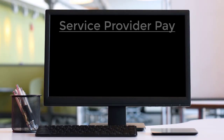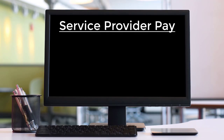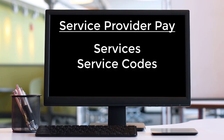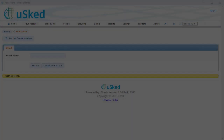Now we are going to talk about the service provider pay aspect of the new billing system. This is where the biggest improvement is. The pay index system is gone. The pecking order system is gone. The new system is much simpler and more straightforward, and now works almost identically to customer billing. For customer billing, we had services and service codes. For service provider pay, we add one more element, which is the concept of service zones. Service zones were called pay regions in the old system.